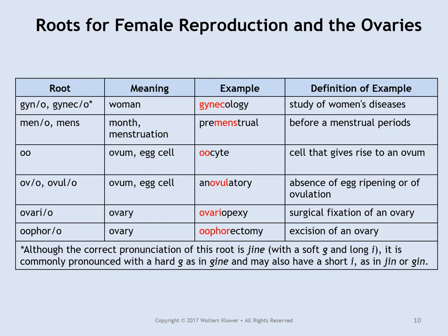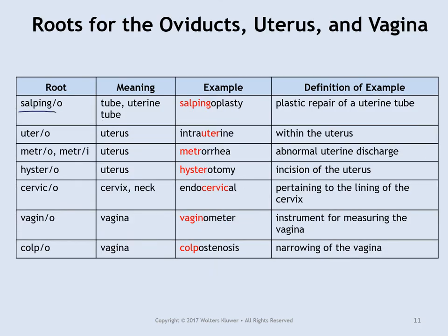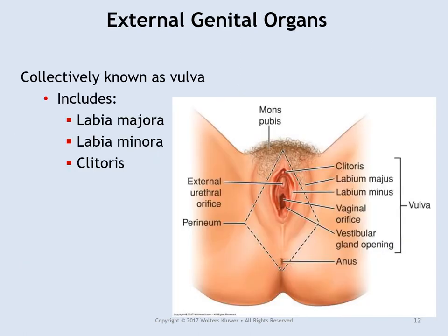Some combining forms referring to the female reproductive system: 'oo' or 'ov' refers to either an egg cell or the ovary — so 'oocyte' means egg cell. 'Salpingo' refers to a tube — specifically the uterine tube here, though you'll see it again in reference to the auditory tubes in the ears. For the uterus, 'utero,' 'metrio,' and 'hystero' all refer to the uterus. 'Colpo' and 'vaginal' both refer to the vagina — know 'colpo' for the quiz.